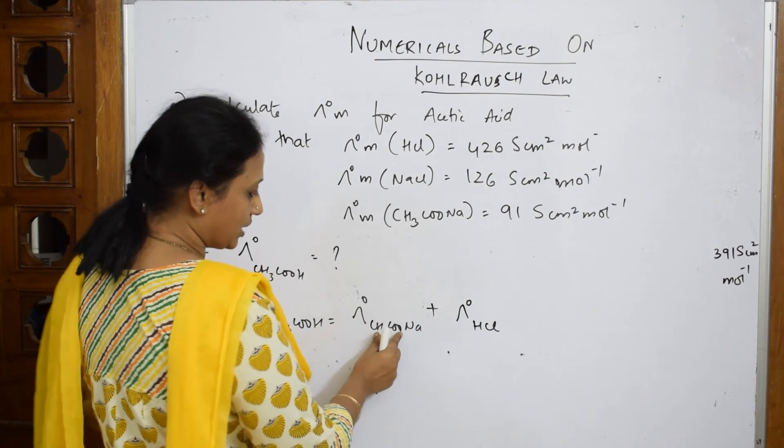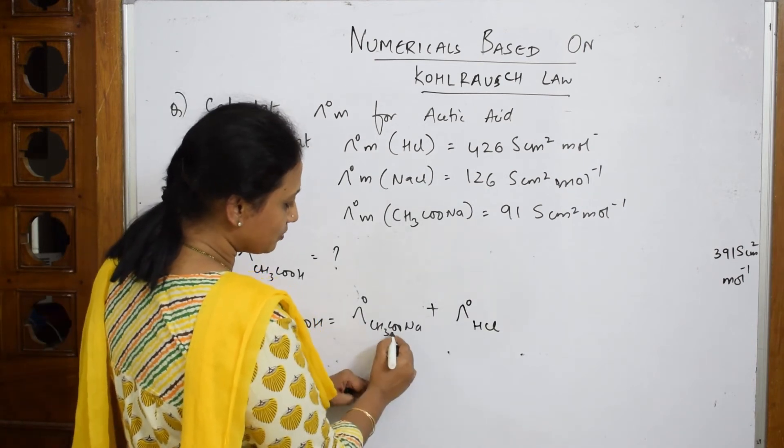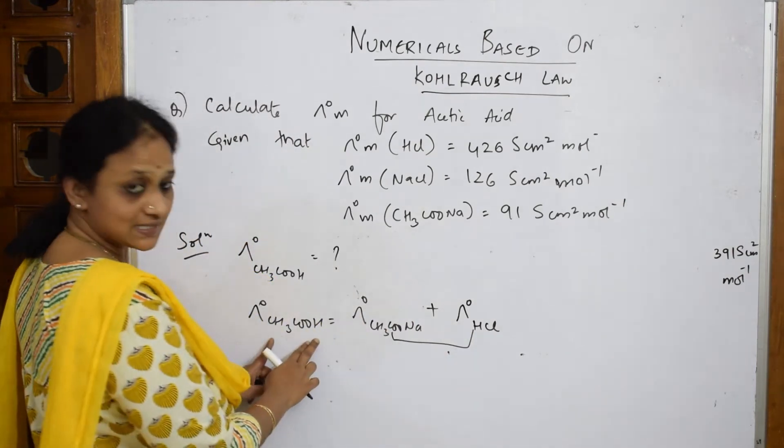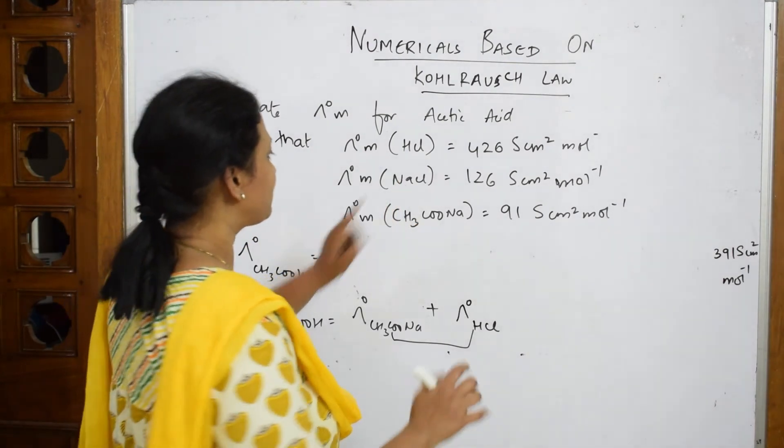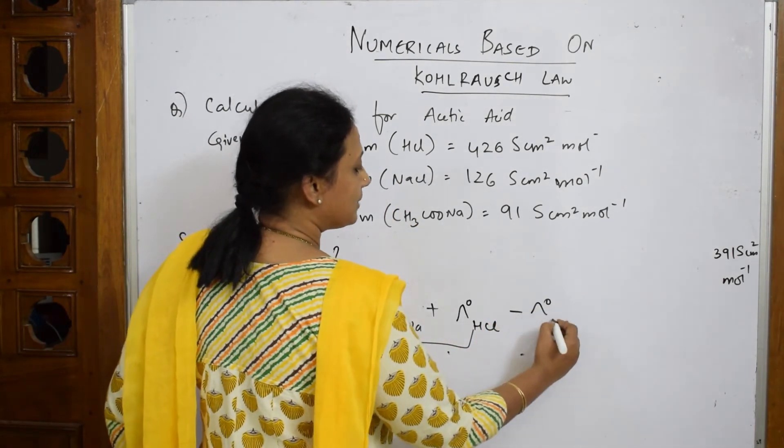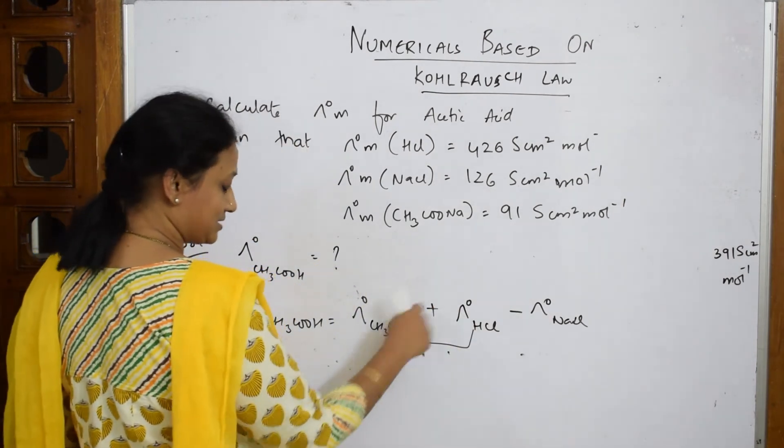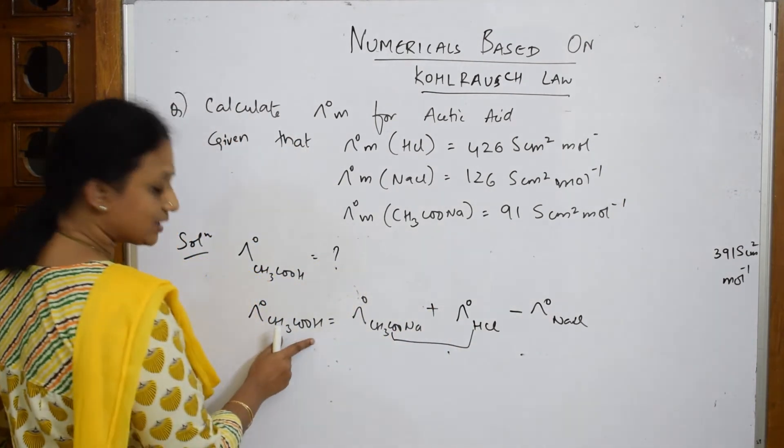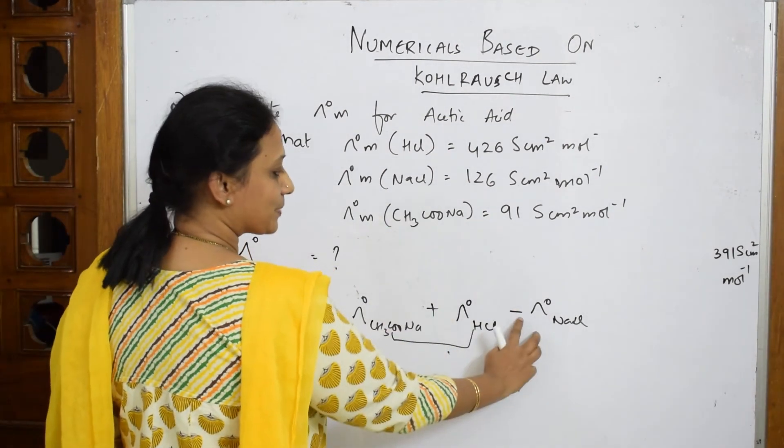Now observe. The CH3COONa is one part, H+ is one part. Together these two make up acetic acid, and the leftover is NaCl. So I have to remove that NaCl from that. That means I have to subtract NaCl from this. Lambda not NaCl. So whichever is excess, that means extra, other than the required acid, you're going to take out those. That is NaCl in this case. Subtract it and get.